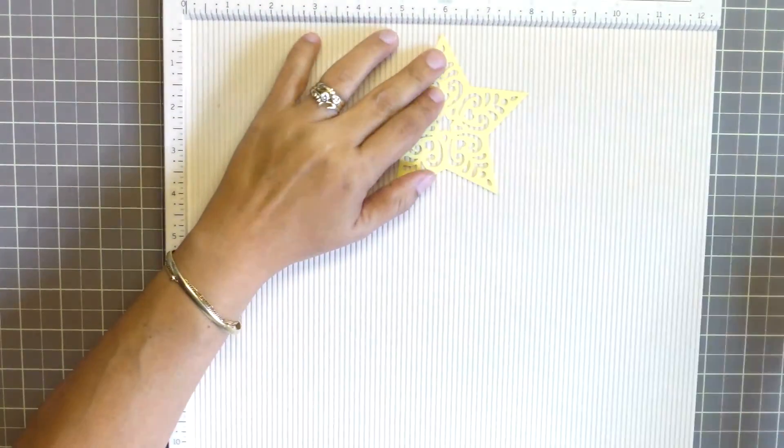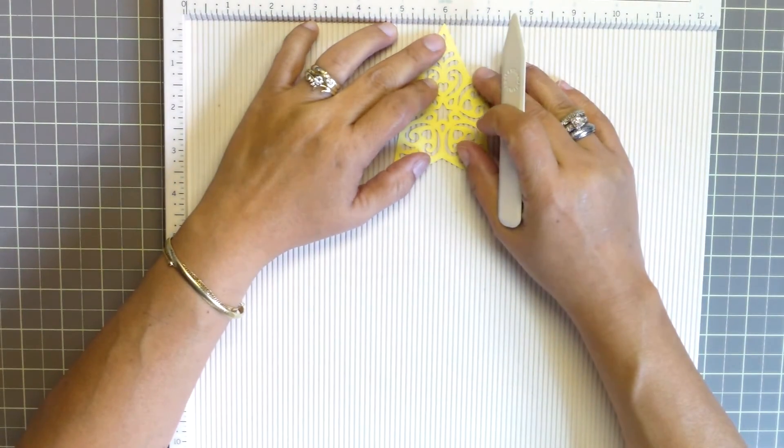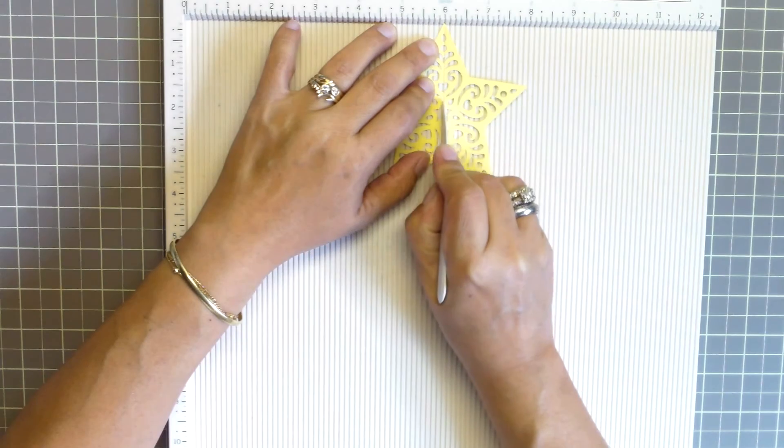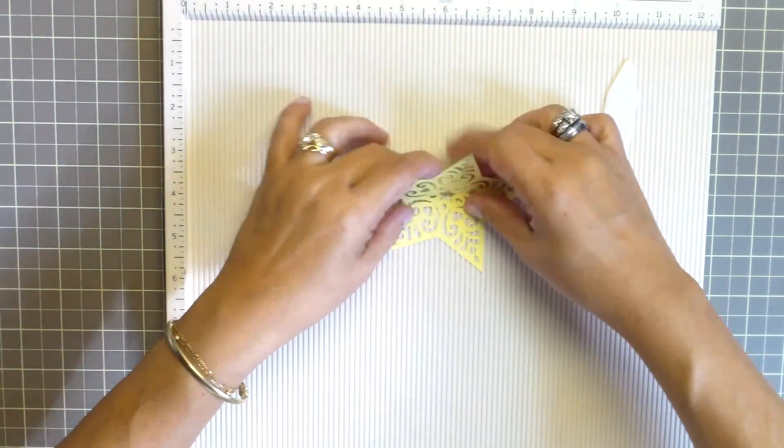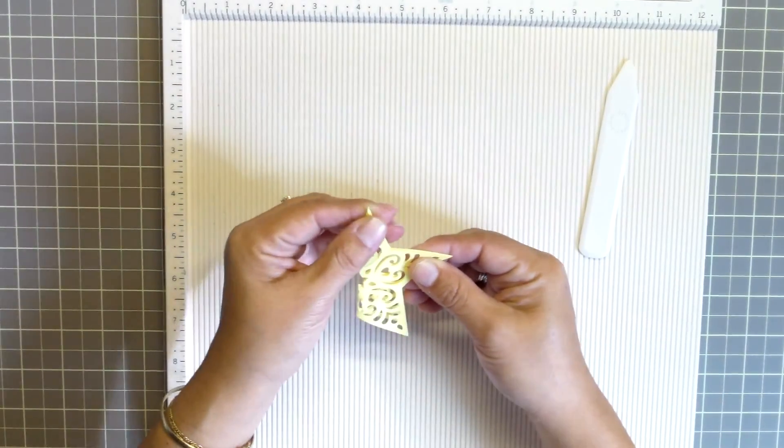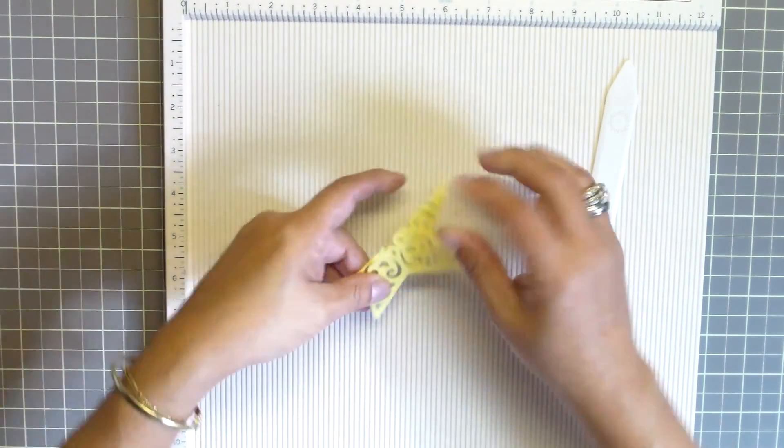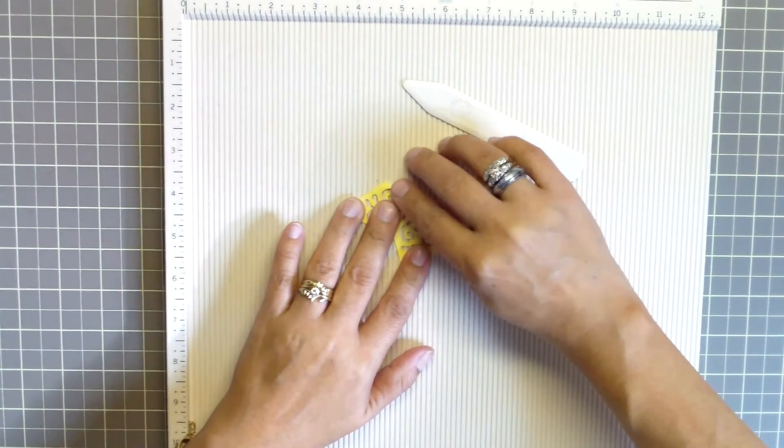Using my score pad I need to score a line down the middle of all the stars. Once the stars have been scored I can fold the stars in half and use the side of my scoring tool to ensure that I have a sharp fold down the middle of each of the stars.